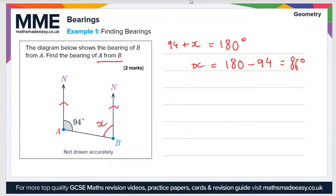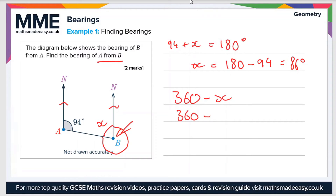Remember rule number three: we always measure from the north line going clockwise. So we want the reflex angle, not the acute angle. To find it, we use the rule that angles around a point add to 360 degrees. So the bearing of A from B is 360 degrees minus X — that's 360 minus 86 — which gives us a value of 274 degrees.